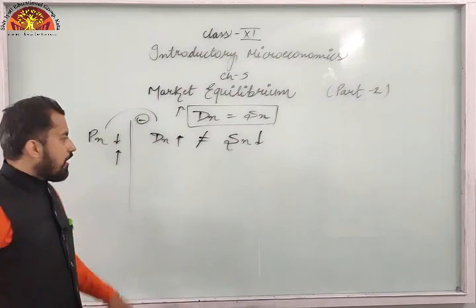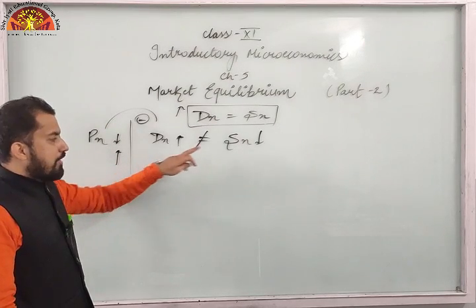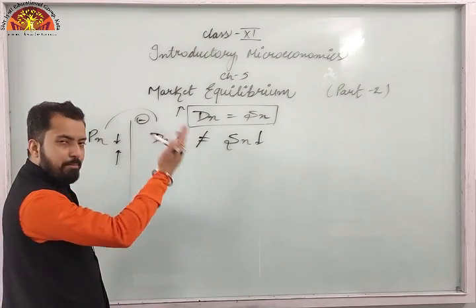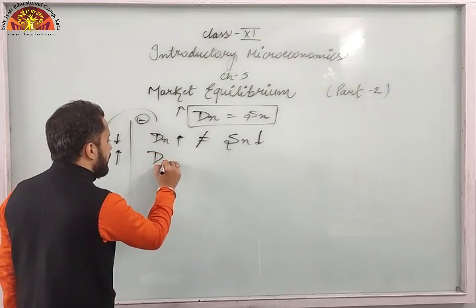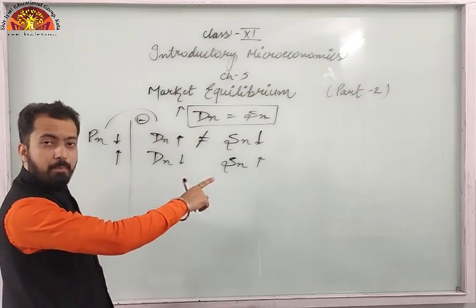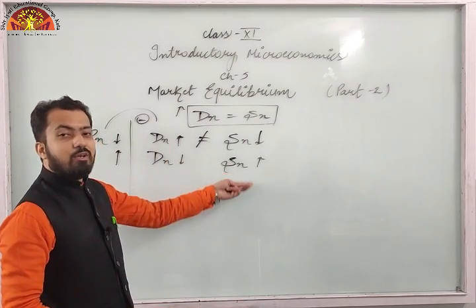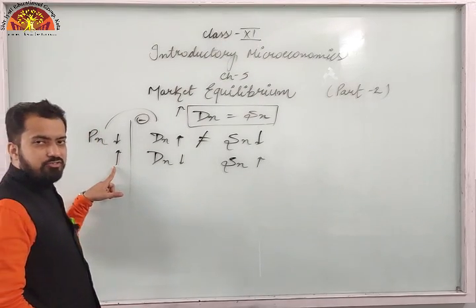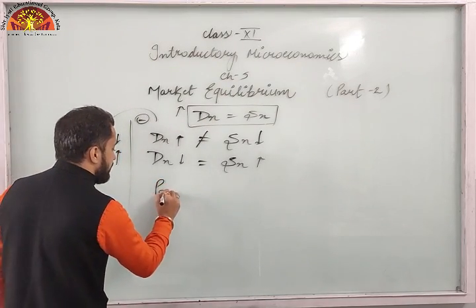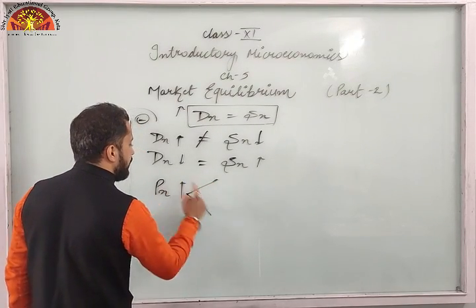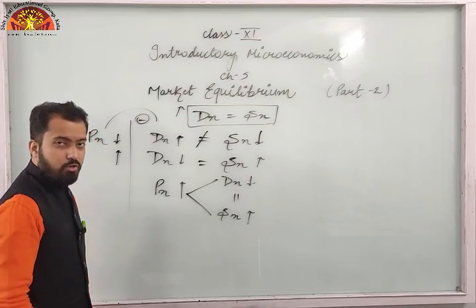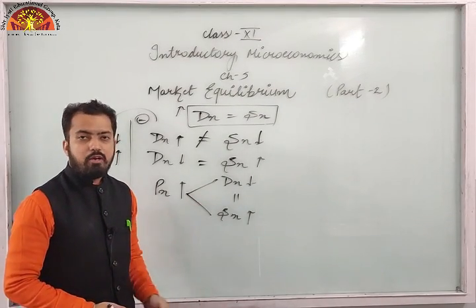If price is increased, demand will automatically be controlled — demand will reduce because many consumers will be prevented from purchasing that product, so DX will reduce. And SX will increase because supply increases with price. We need to keep increasing price until DX equals SX. At that point both will automatically match and we will get the equilibrium quantity.